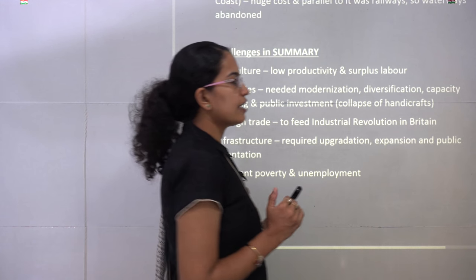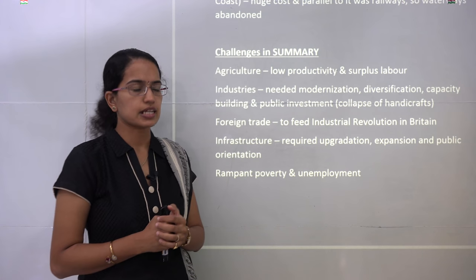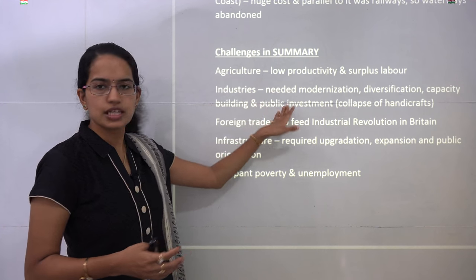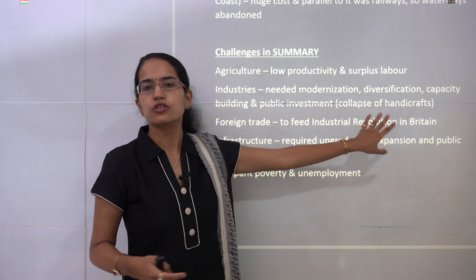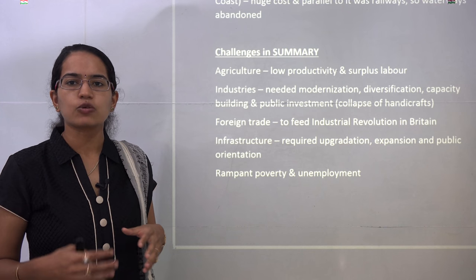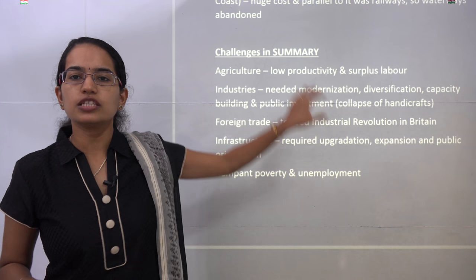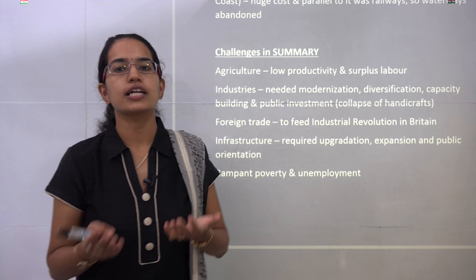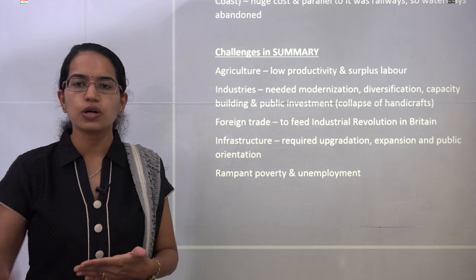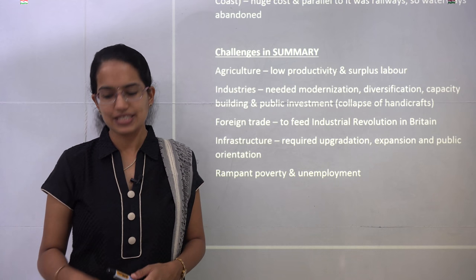In the aviation sector, Tata Airlines was first established in 1932 and inaugurated the aviation sector in India. In summary: in agriculture, productivity was very low with surplus labor; industries required modernization, expansion, diversification, and capacity building; foreign trade only fed the industrial revolution in Britain; and infrastructure was hollowed out, requiring upgradation and expansion. There was rampant poverty, social issues, and high unemployment — these were the challenges India faced on the eve of independence. In the next sections we will look at how India worked around these challenges with the establishment of the Planning Commission and so on.